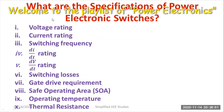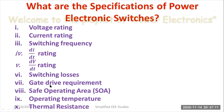The following parameters are considered while selecting power electronic switches: voltage rating, current rating, switching frequency, di/dt rating, dv/dt rating, switching losses, gate drive requirement, safe operating area (SOA), operating temperature, and thermal resistance. These are the important parameters we need to consider before selecting a power electronic switch for a desired application.